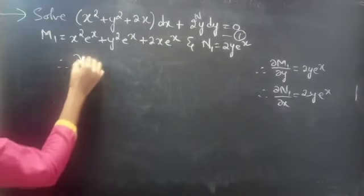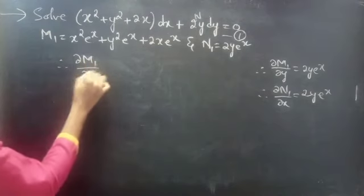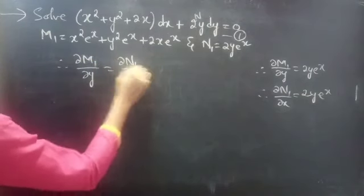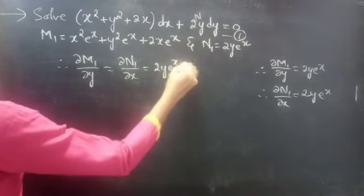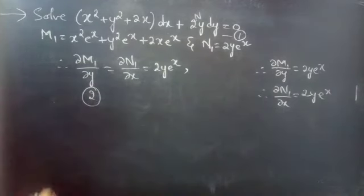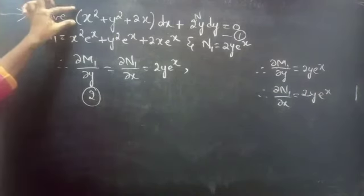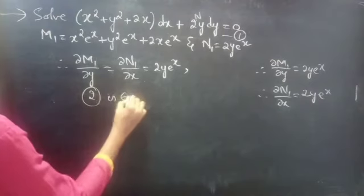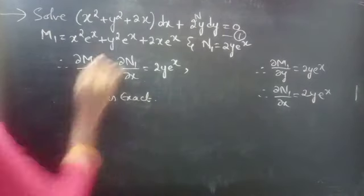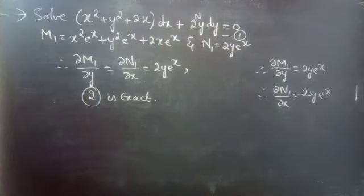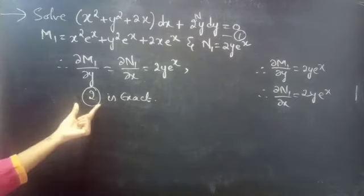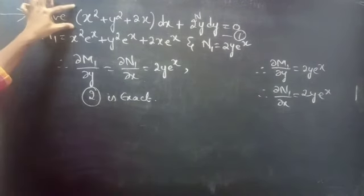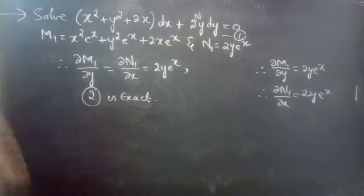Therefore, partial derivative of M1 with respect to y equals partial derivative of N1 with respect to x equals 2y·e^x. From this, we can say that the reduced equation — obtained by multiplying the integrating factor to the given equation — is exact. Now we need to find the general solution to the given equation. The general solution of equation 2, the exact equation, will be the general solution to the given equation.